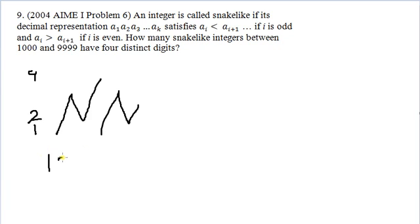So let me just write out a few examples. So one, three, two, four would be an example of a snake-like integer. It goes up, then down, then up. Specifically, we're asking for snake-like integers with four distinct digits. So you can't repeat digits, and also it needs to be between a thousand and nine, nine, nine, nine. So we know it can't start with a zero. Because if it's zero, it would be a little bit confusing.